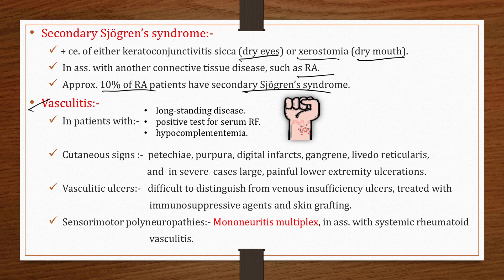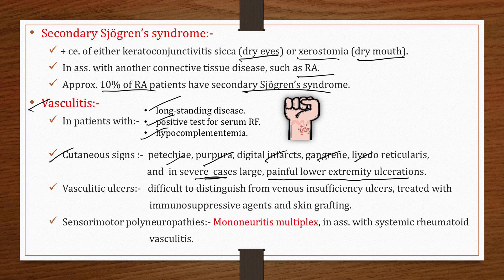Vasculitis is especially seen in patients with long-standing disease, positive rheumatoid factor, and hypocomplementemia. Cutaneous signs include patchy purpura, digital infarcts, gangrene, livedo reticularis, and in severe cases, large painful lower extremity ulcerations. Vasculitis ulcers can be difficult to distinguish from venous insufficiency ulcers and are generally treated with immunosuppressive agents and skin grafting.